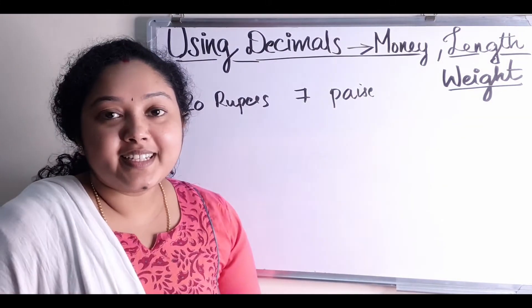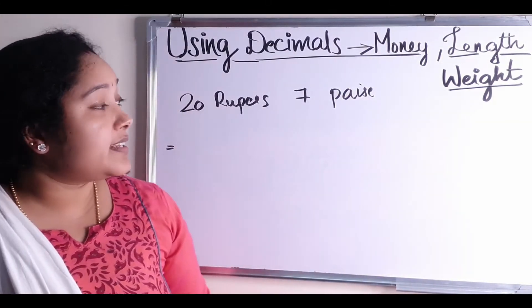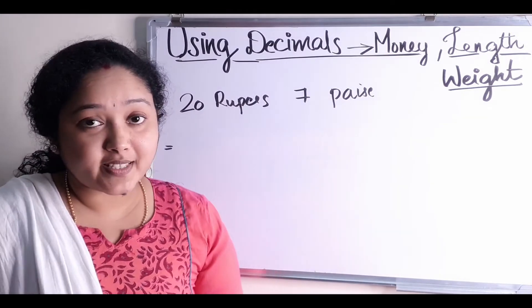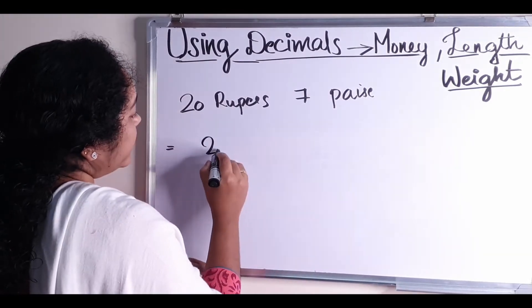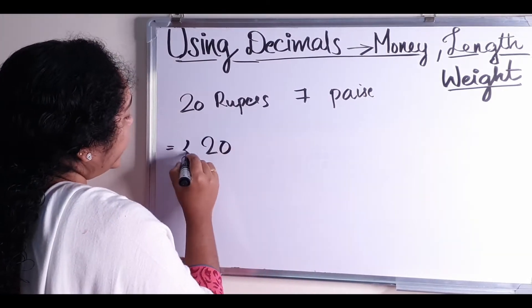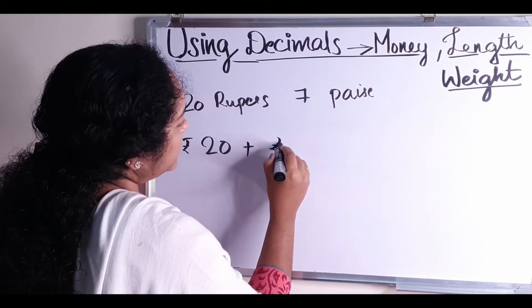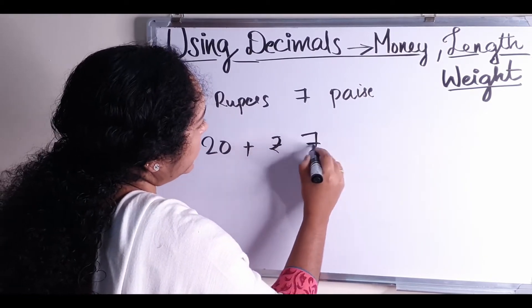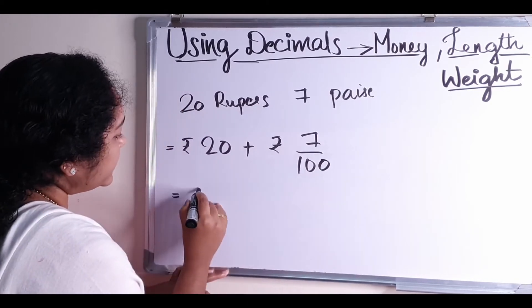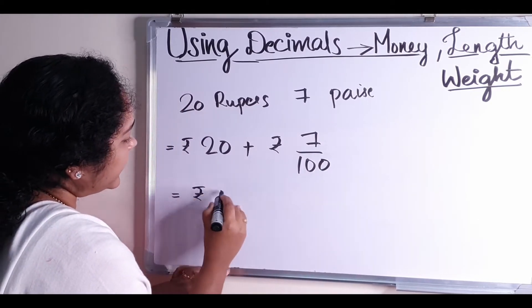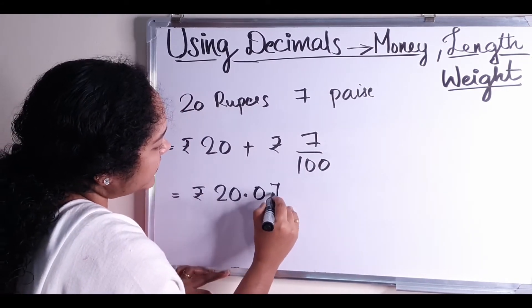Next: how to write 20 rupees and 7 paise. 20 rupees means 20, plus 7 paise means 7 by 100. That is equal to rupees 20.07.